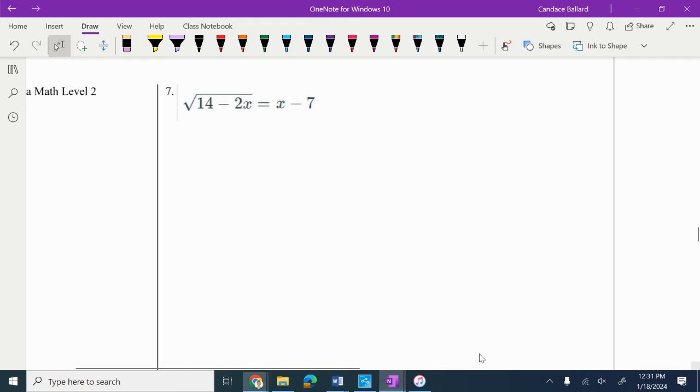We're looking at topic 5.7, problem your turn number 7. To undo a square root, we need to square both sides. So we're going to square this side and square this side.